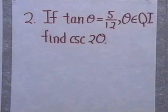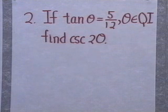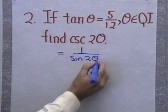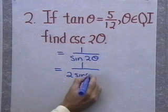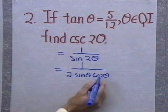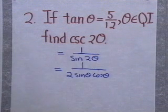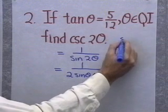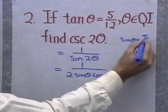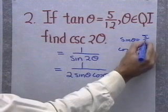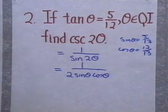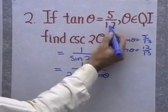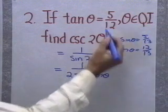Let's take a look at our second problem. Suppose tan(θ) = 5/12 and theta is in quadrant 1. Can we find csc(2θ)? Well, csc(2θ) = 1/sin(2θ). And since sin(2θ) = 2 sin(θ) cos(θ), all I need is sin(θ) and cos(θ). Now, if tan(θ) = 5/12, I know that tan(θ) = sin(θ)/cos(θ). So sin(θ) is going to be 5 over something and cos(θ) is going to be 12 over something. From the Pythagorean triple, you know it's going to be sin(θ) = 5/13 and cos(θ) = 12/13. Since theta belongs to quadrant 1, sine, cosine, and tangent are all positive.